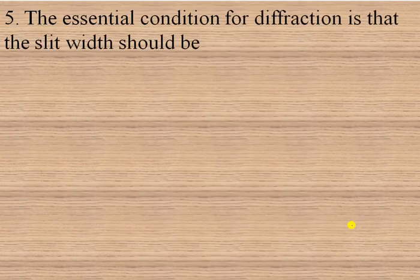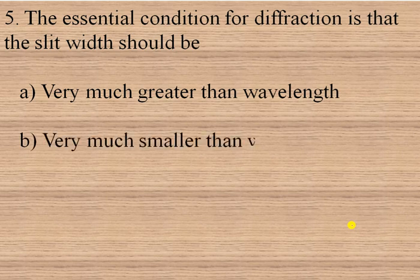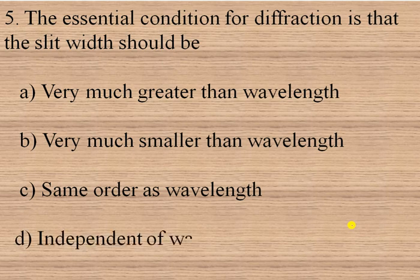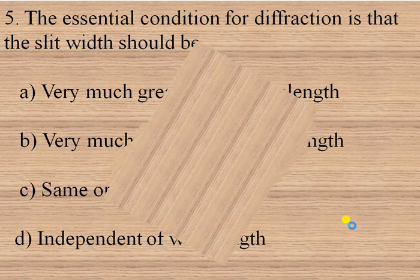The next question is: the essential condition for diffraction is that the slit width should be — very much greater than wavelength, very much smaller than wavelength, the same order as wavelength, or independent of wavelength? As discussed before, the slit width should be of the same order as the wavelength. So option C is the right option.